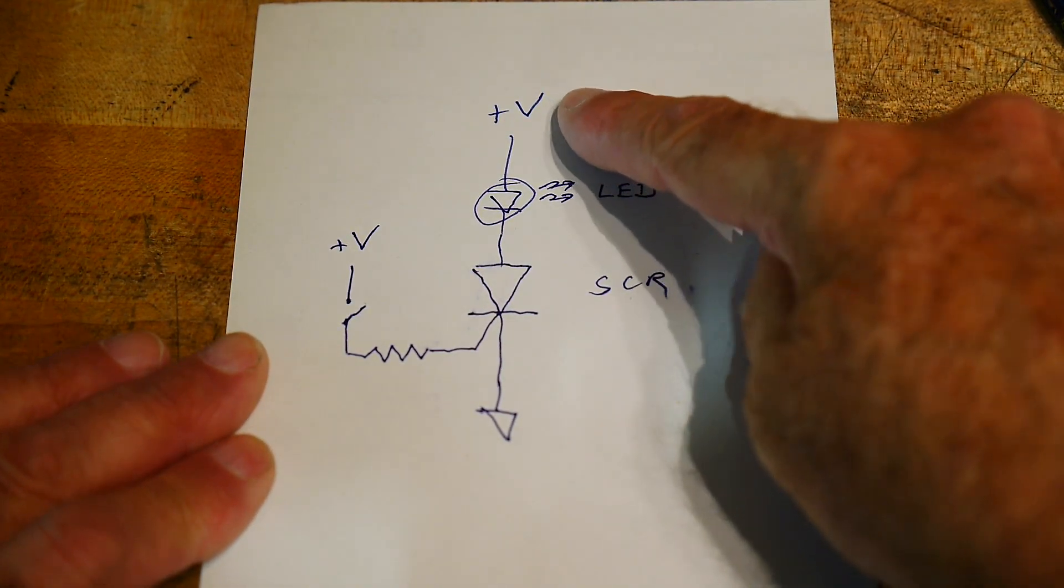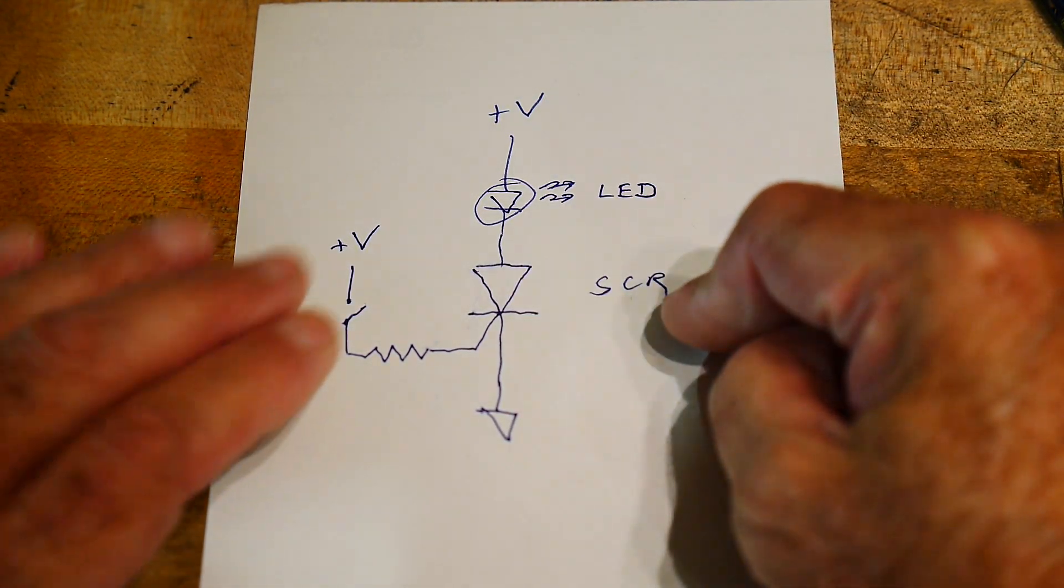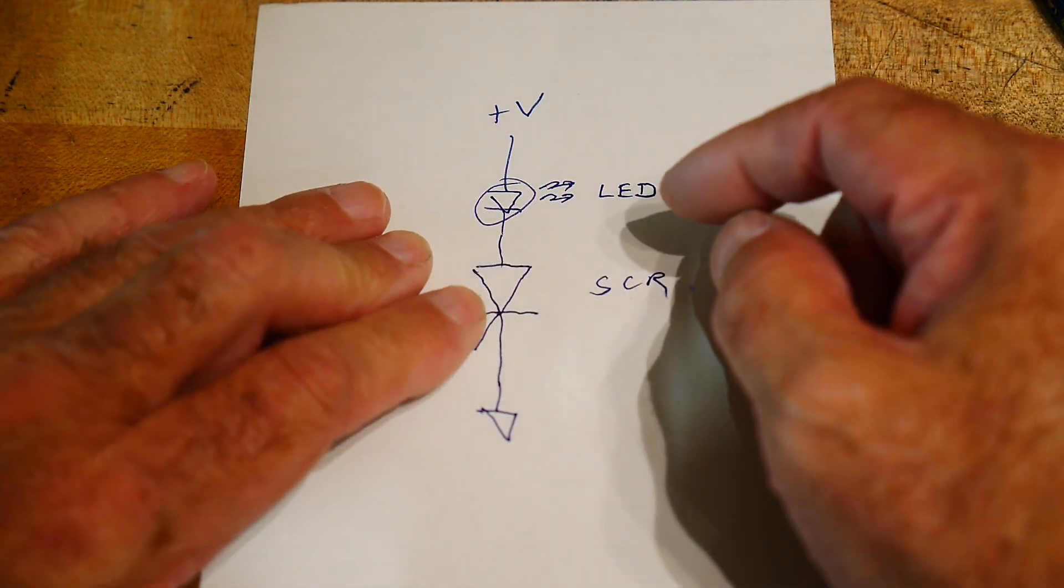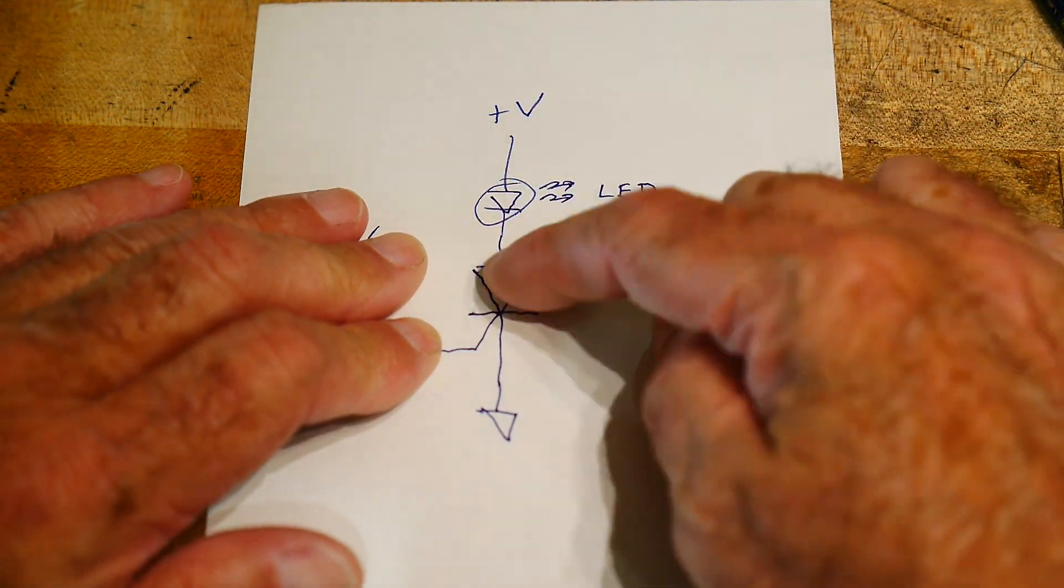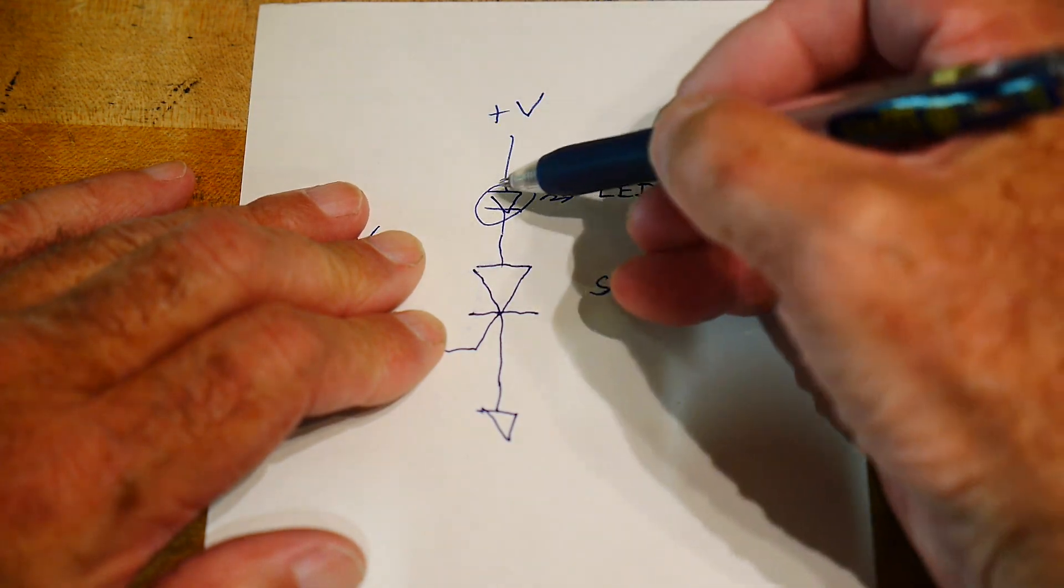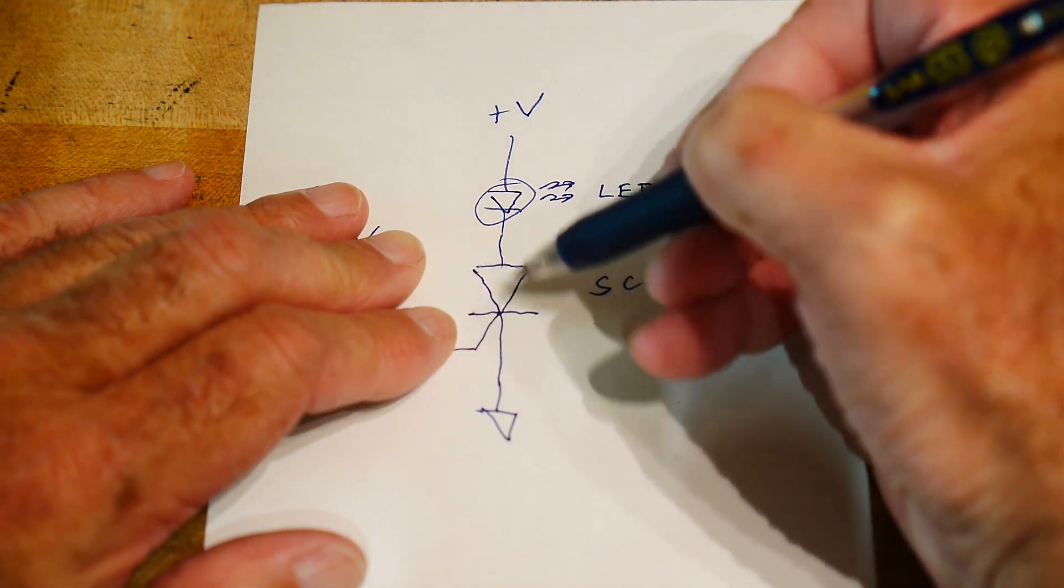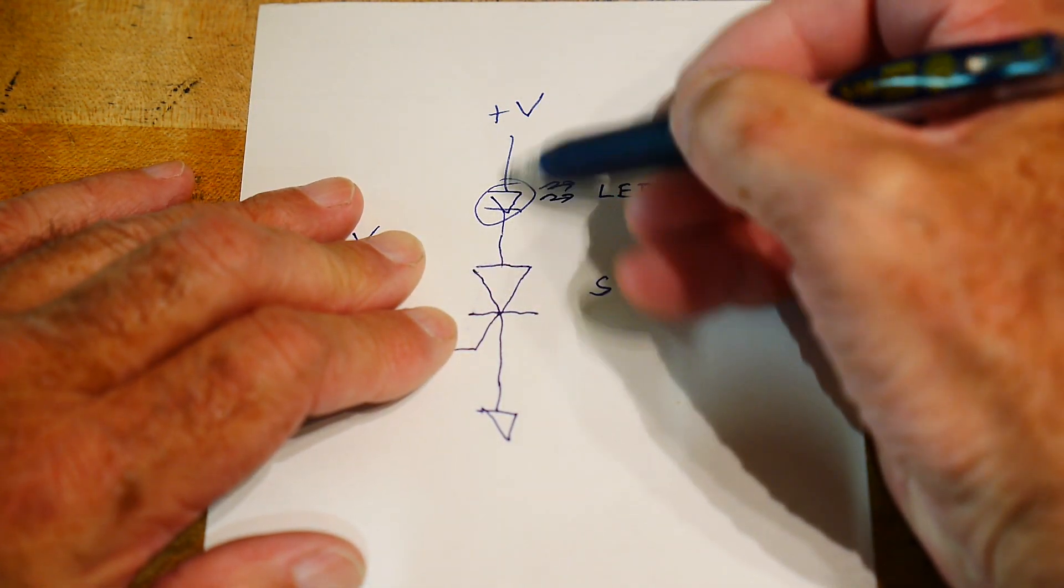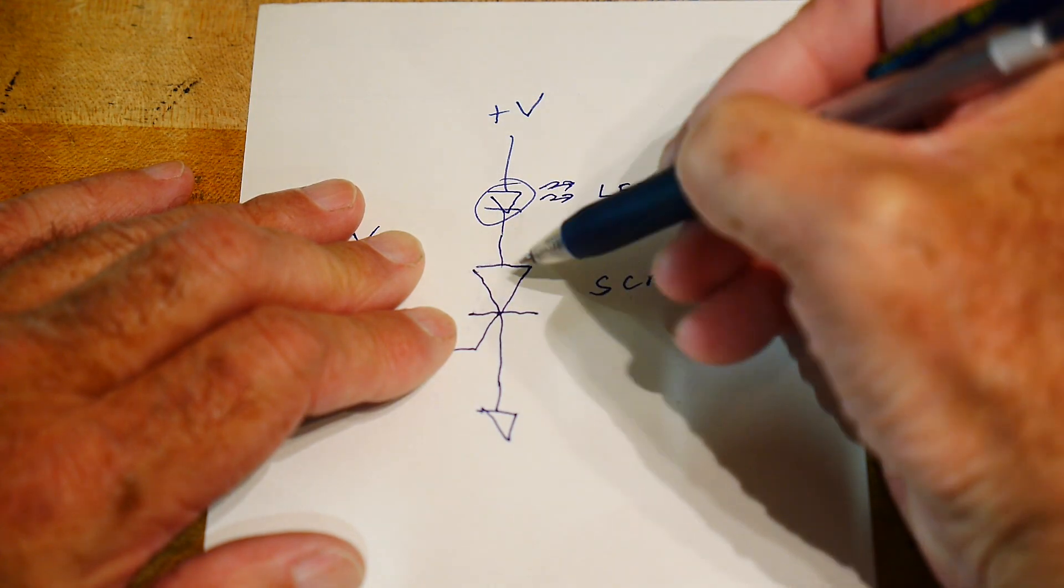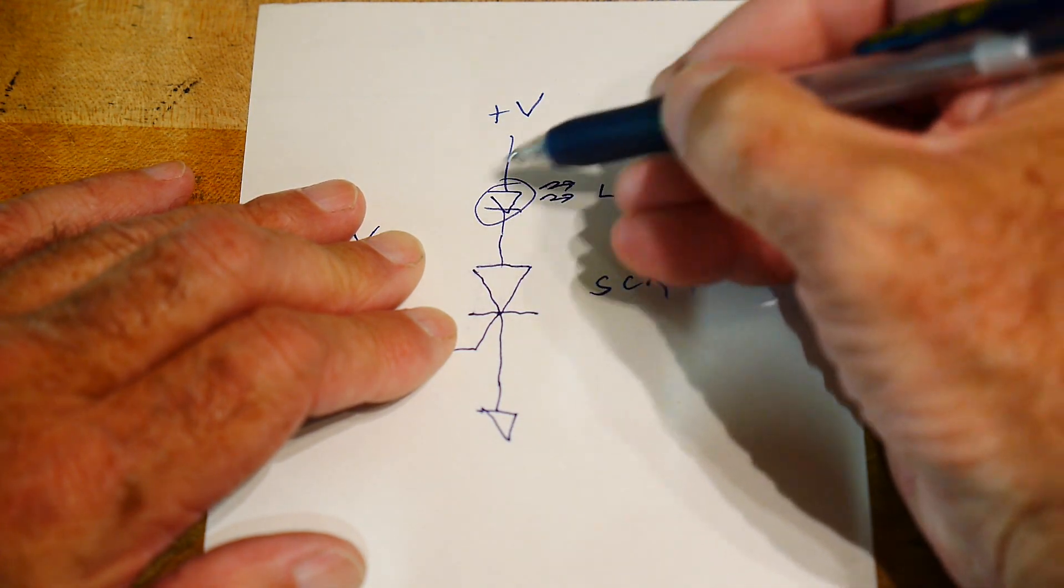So we have an LED and an SCR. So you can think of these two things as diodes. That's how it's drawn, diode and diode. So if this were just a regular diode, then you would have current go through the LED and then through the diode to ground and the LED would light.